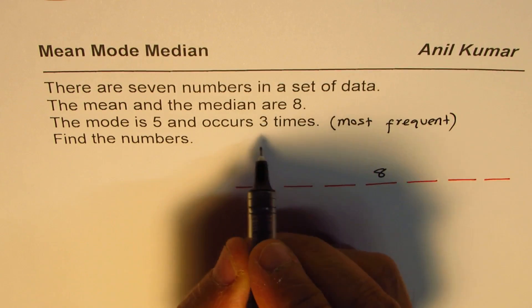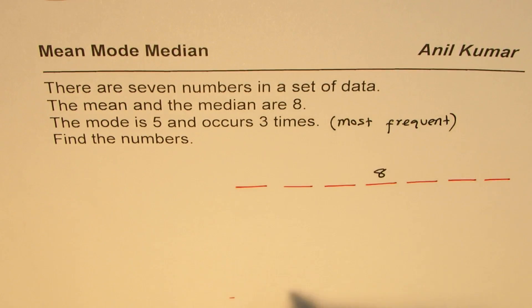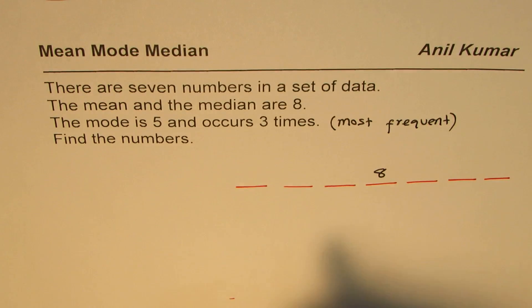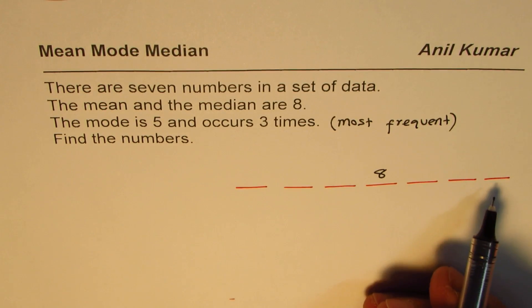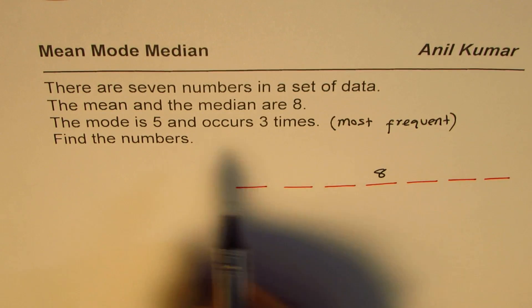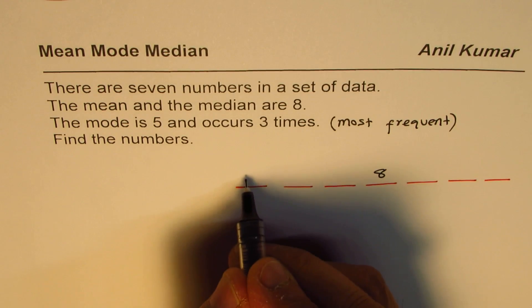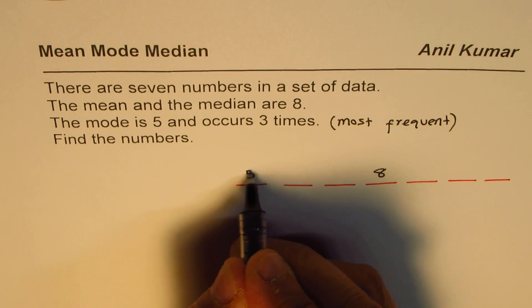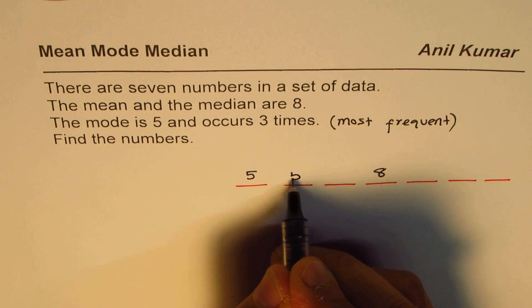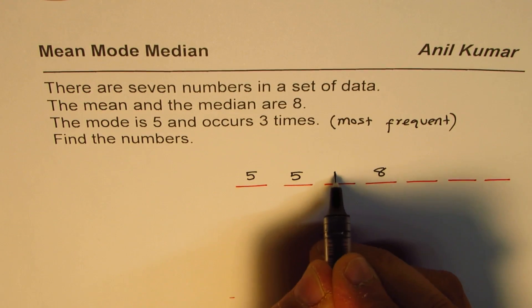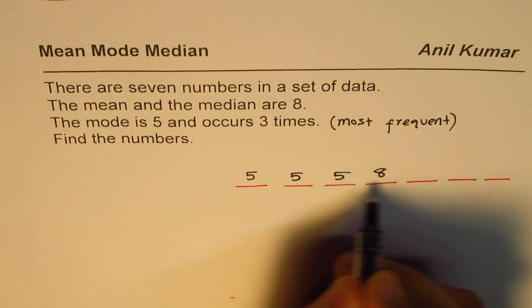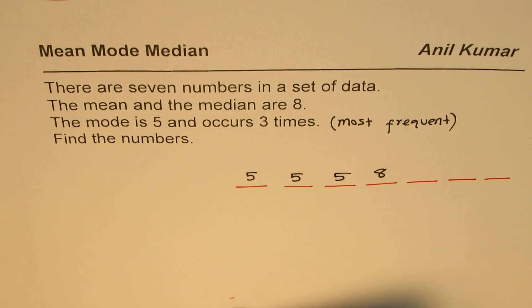The mode is five and it occurs three times. Since we have arranged the numbers in increasing order, the three fives should occupy the first three places.